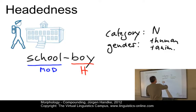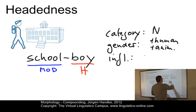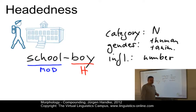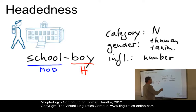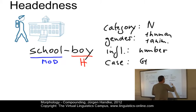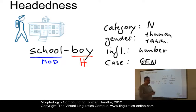Then the head takes the inflectional properties, for example number. If you want to turn the compound 'schoolboy' into the plural, you have 'schoolboys' — you attach the suffix for the plural at the head and don't add it to the modifier. And finally, in syntax, it is case. For example, the genitive case in present-day English would be 'the schoolboy's best friend'.